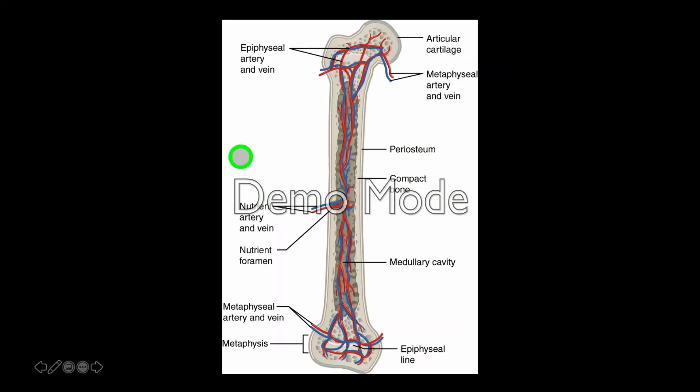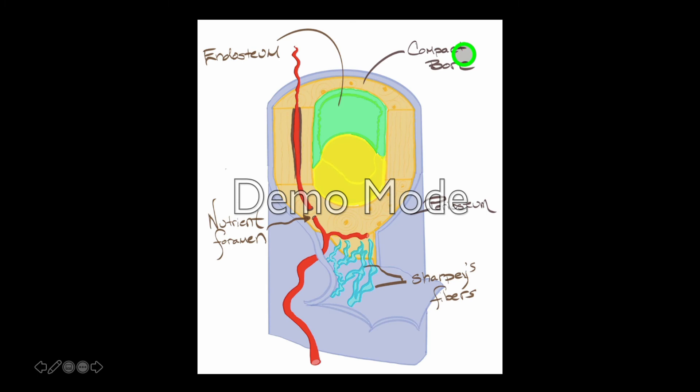Here's just a better image of that nutrient foramen allowing access of arteries going into the bone and veins leaving the bone. And then the innermost layer lining the medullary cavity is the endosteum. Lining the outside of bone is periosteum. Lining the inside of the medullary cavity and throughout spongy bone as well is the endosteum.